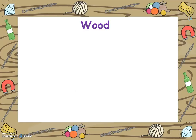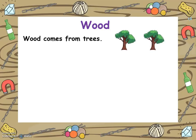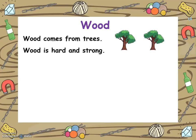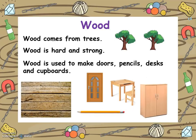The first one we're going to look at is wood. Wood comes from trees. It is hard and strong. Wood is used to make doors, pencils, desks and cupboards and many other items that are found in our homes and in the classrooms.